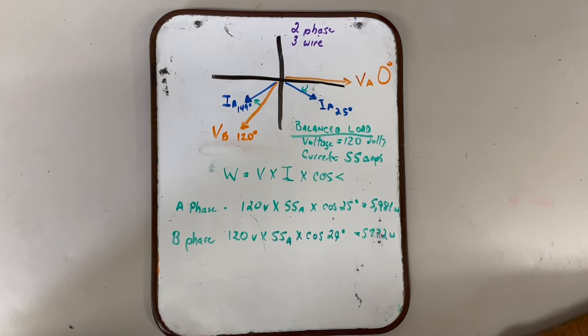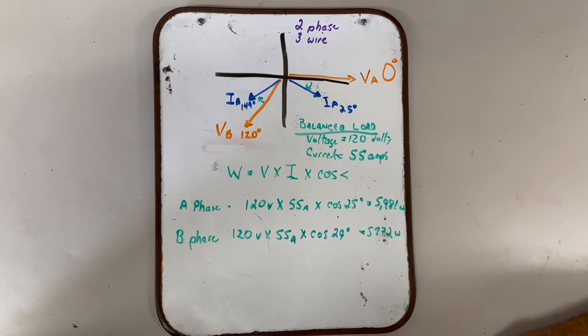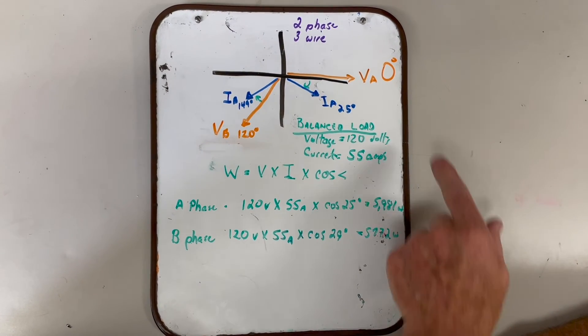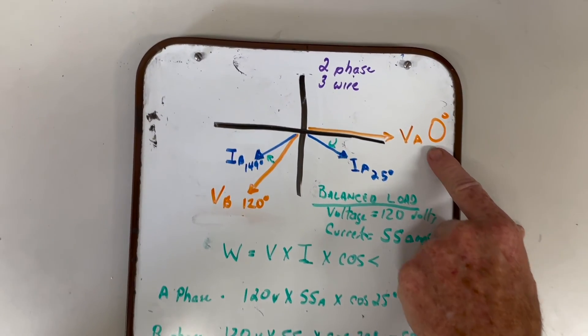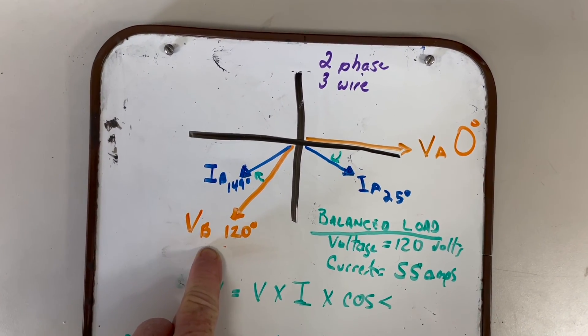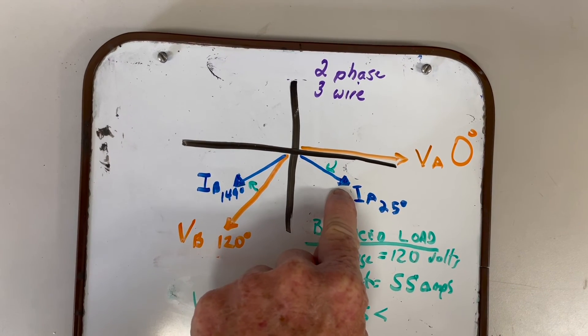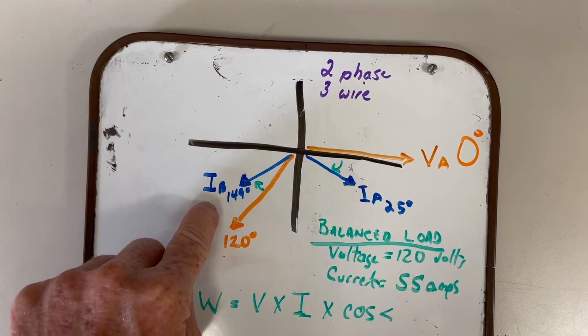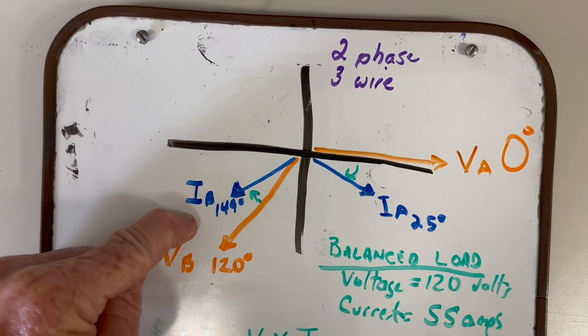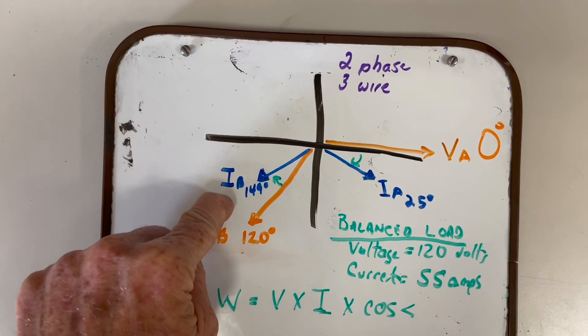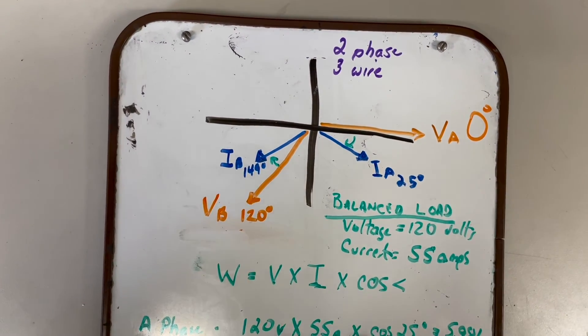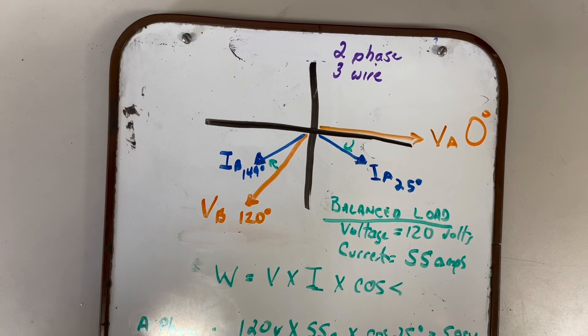Two phase three wire vector diagram, just to show you in case someone ever has to add up the watts. What we're looking at here on two phase three wire: we have voltage A at zero degrees, voltage B at 120 degrees. We have current A lagging voltage A by 25 degrees. We have current B lagging voltage B by 29 degrees.